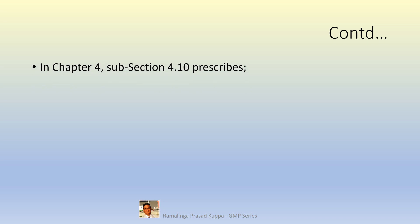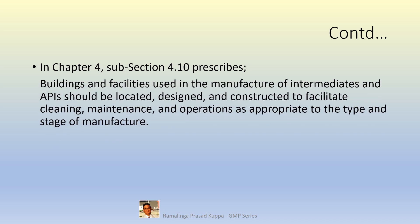In Chapter 4, Subsection 4.10 prescribes buildings and facilities used in the manufacture of intermediates and APIs should be located, designed and constructed to facilitate cleaning, maintenance and operations as appropriate to the type and stage of manufacture. Infrastructure should be appropriate for the manufacturing stages. It is important to ensure that the civil infrastructure is suitable to accommodate process equipment and necessary utilities.